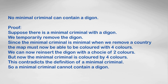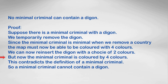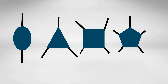Let's go through the formal proof slowly. What we want to prove is that no minimal criminal can contain a diagon. Suppose there is a minimal criminal with a diagon — that's the proof by contradiction part. We temporarily remove the diagon. Since the minimal criminal is minimal, when we remove a country the map must now be colourable with four colours. We can then reinsert the diagon with a choice of two colours. But now the minimal criminal is coloured with four colours, which contradicts the definition of a minimal criminal. Therefore a minimal criminal cannot contain a diagon. So we've shown that we can rule out the diagon from the unavoidable set.